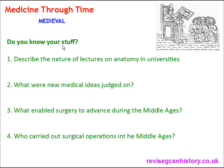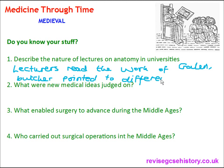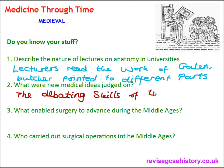Question one: Describe the nature of lectures on anatomy in the universities. Answer: Lecturers read the work of Galen, and a butcher or barber pointed to different parts of the body. Question two: What were new medical ideas judged on? Answer: The debating skills of the person with the idea, not on scientific proof.